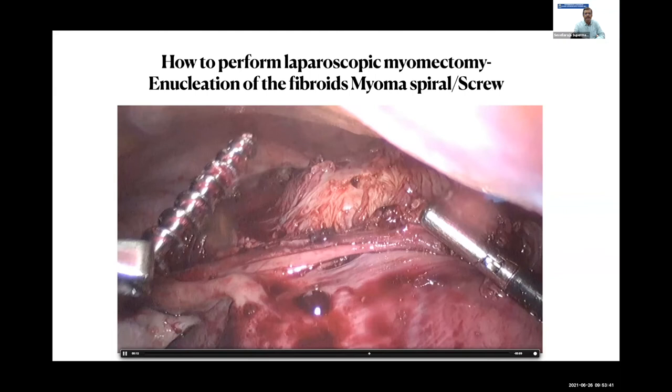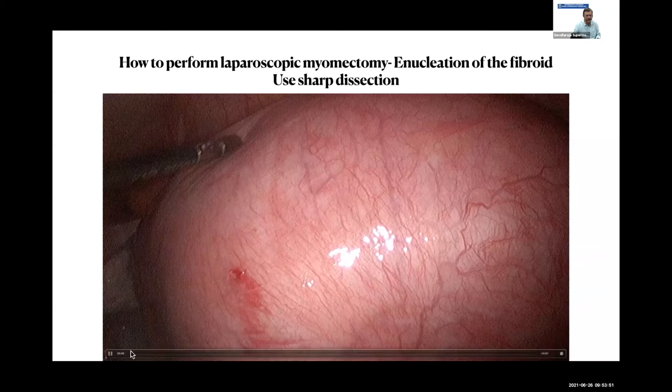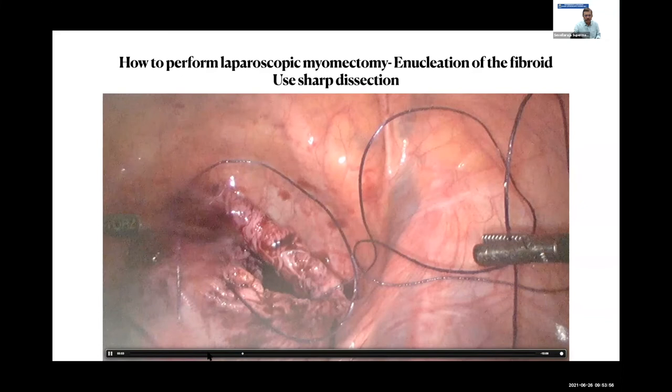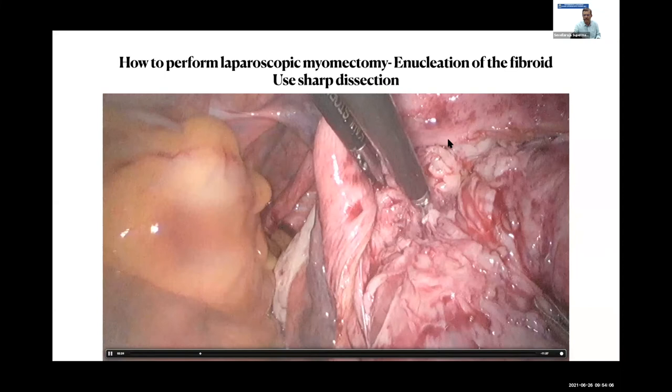For enucleation, most people use blunt dissection, but I would advise using sharp dissection. In patients who have received GnRH to shrink a large fibroid, use scissors to do sharp dissection if you cannot see the tissue planes clearly.